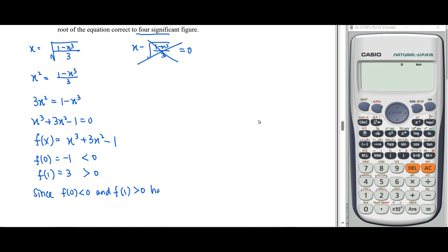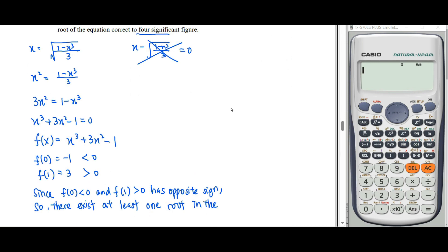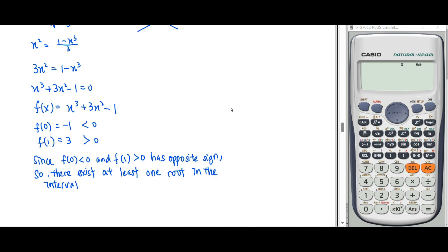They have opposite signs, so there exists at least one root in the interval (0,1).